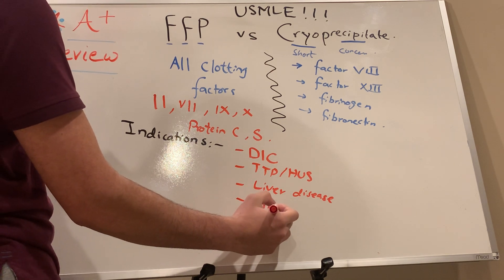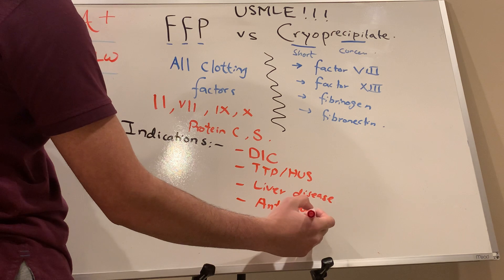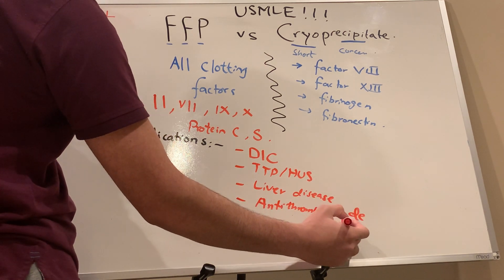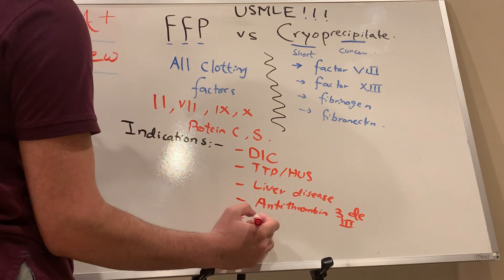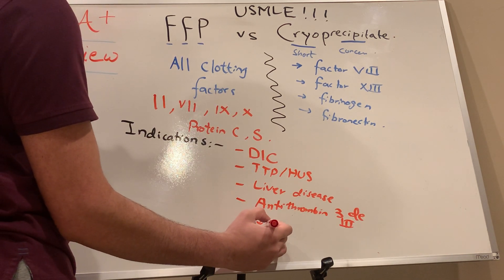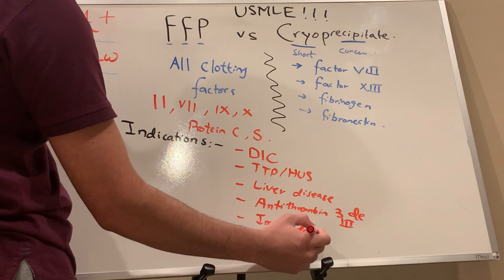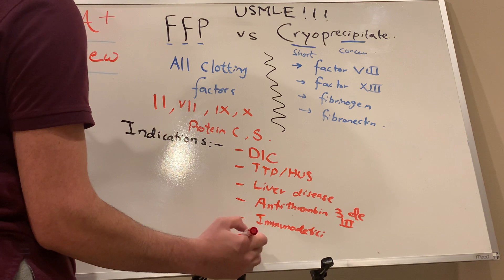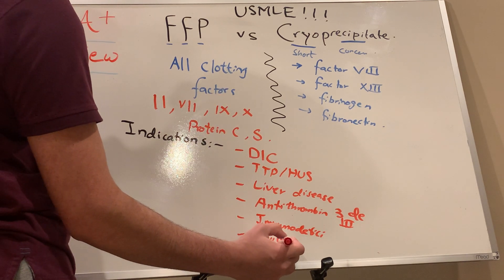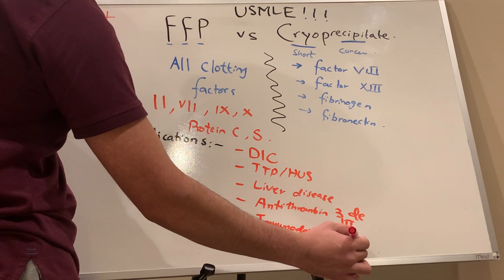Additional highlighted indications for FFP include antithrombin 3 deficiency and immunodeficiencies. Fresh frozen plasma is also given for multiple clotting factor deficiencies.